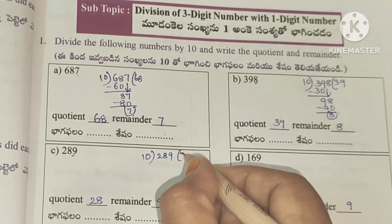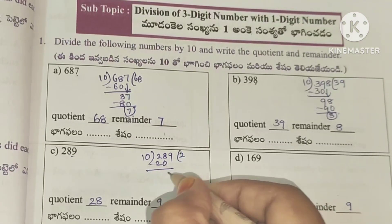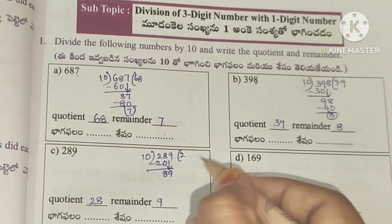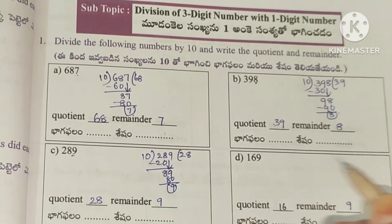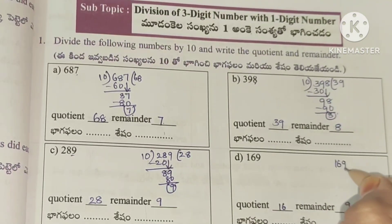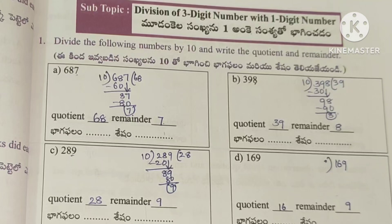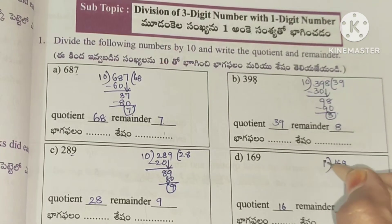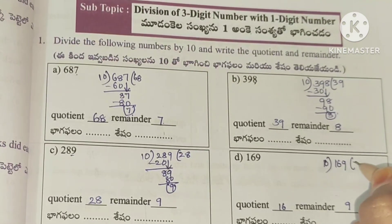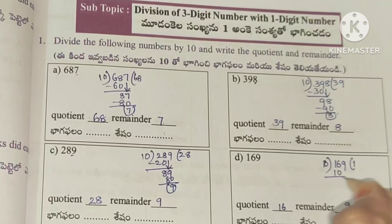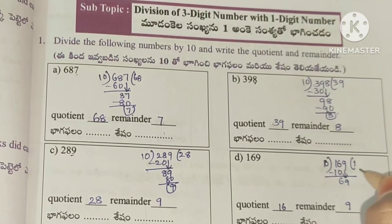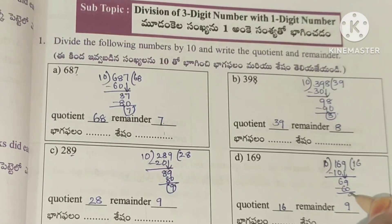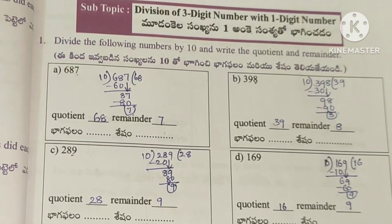10 times 2 is 20, after subtraction 8. Next: 1080 divided by 10, reminder 9. Then 169: 10 times 1 is 10, subtraction gives 6, bring down 9. 10 times 6 is 60, so 9 is the remainder.